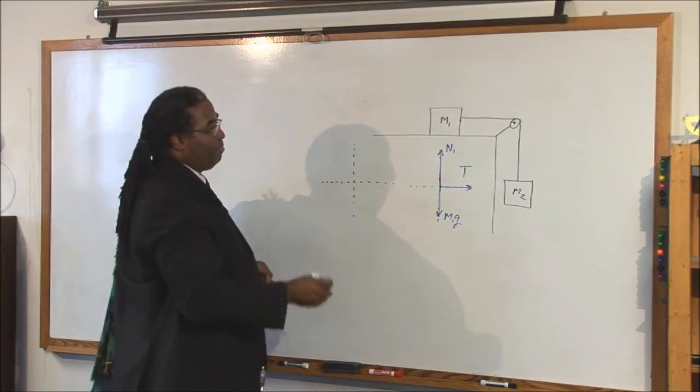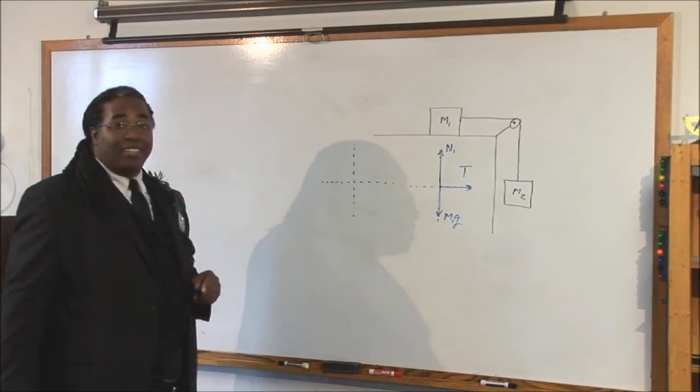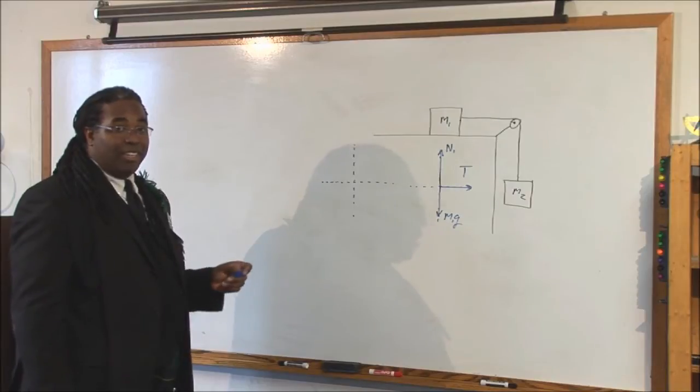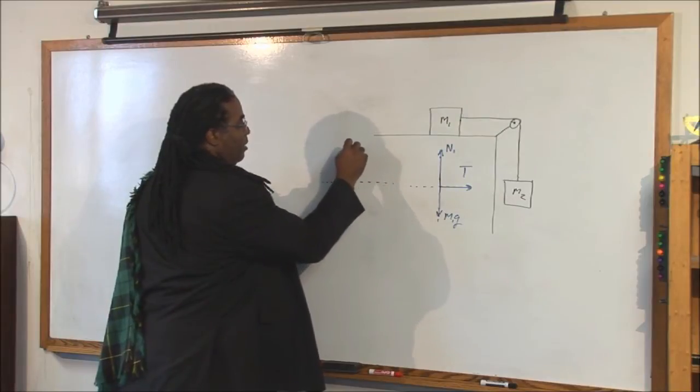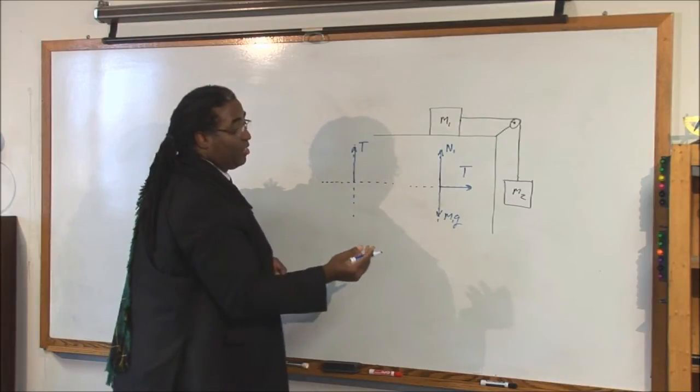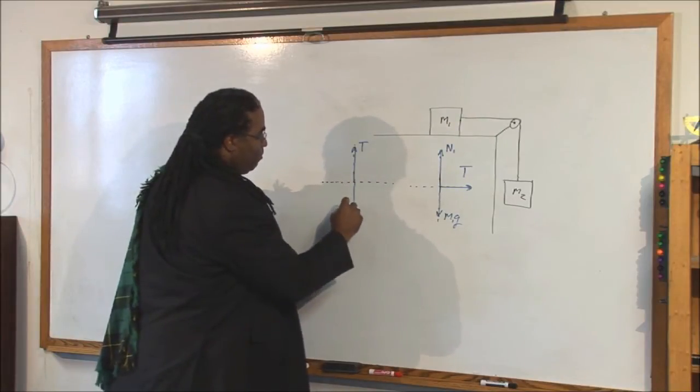Let's do the second block. How many forces do you have acting on it? What's touching it plus gravity? There's a tension touching it and pulling it up. There's nothing else touching it, so gravity.